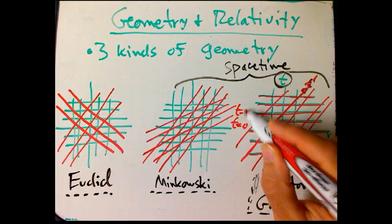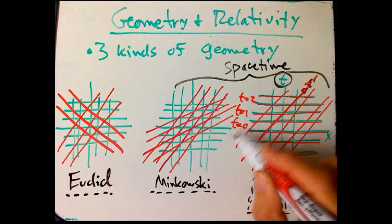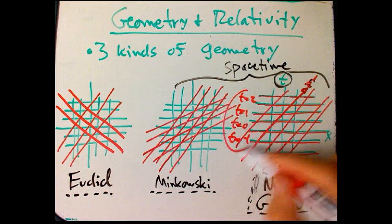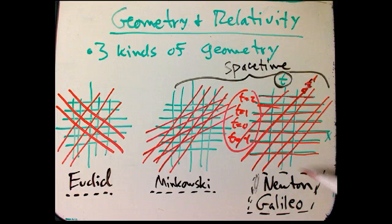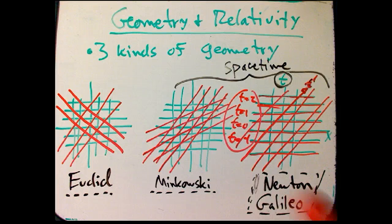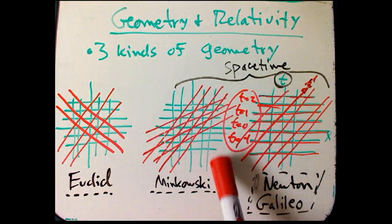So this is t equals zero, t equals one, t equals two. All those measurements of time, which form the horizontal parts of the grid, are going to be the same. Newton thinks there's such a thing as absolute time. So let's think about this, once again, to kind of get ourselves more used to this picture, which is really what's going on.